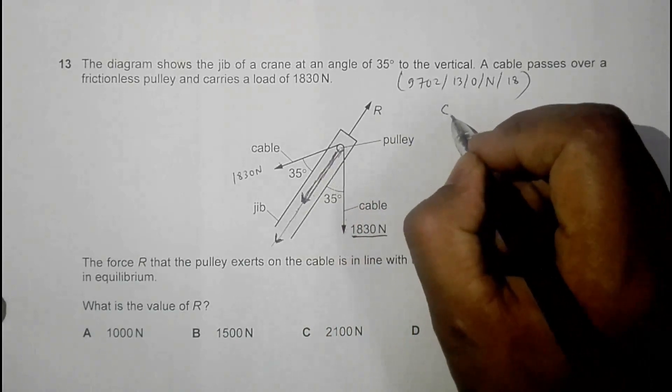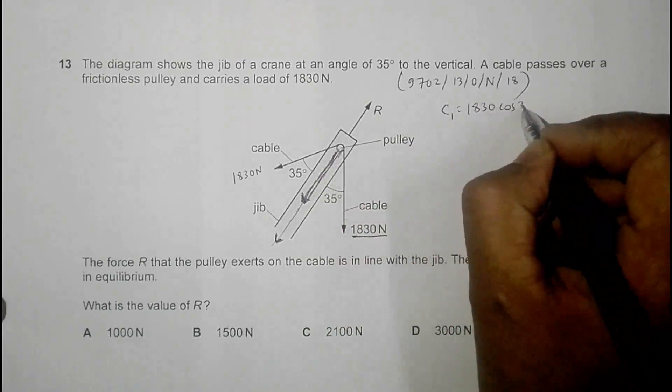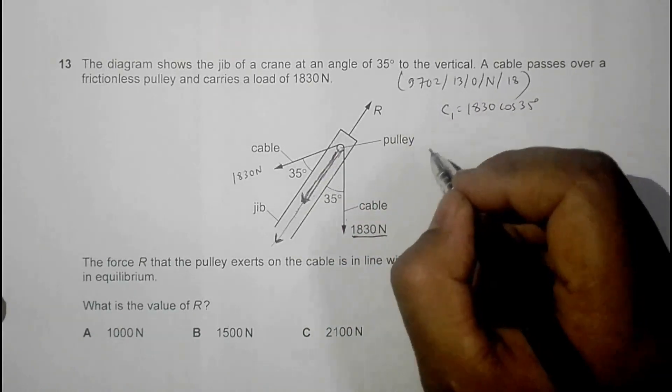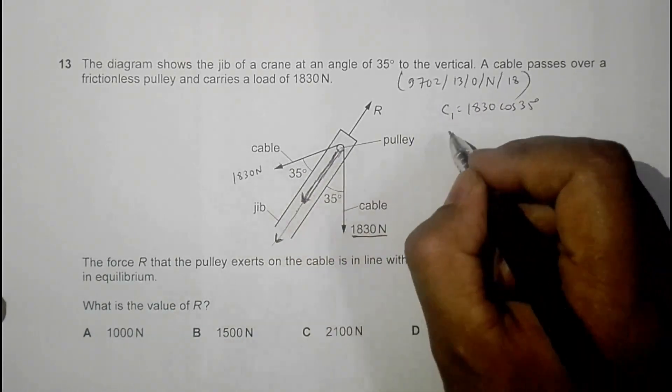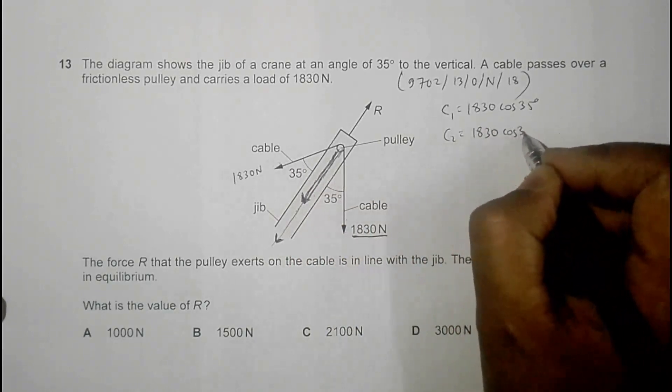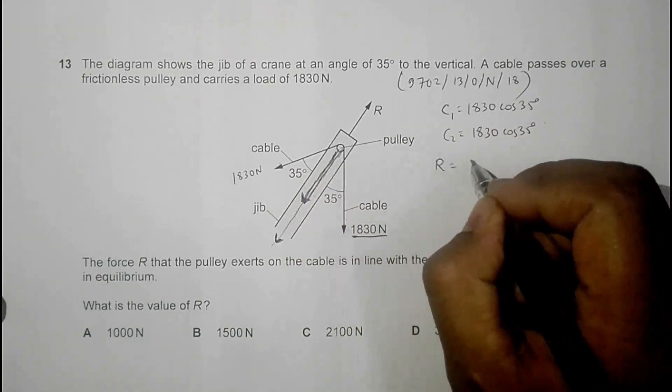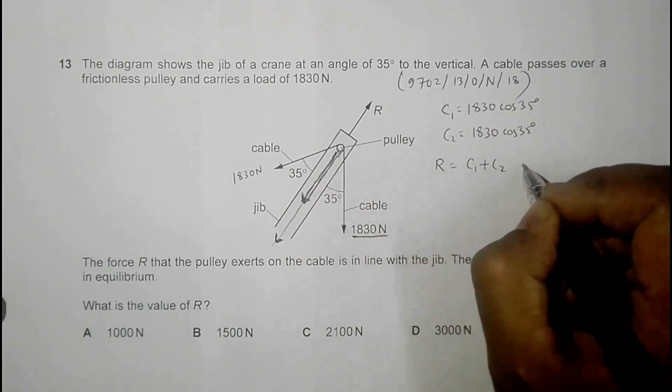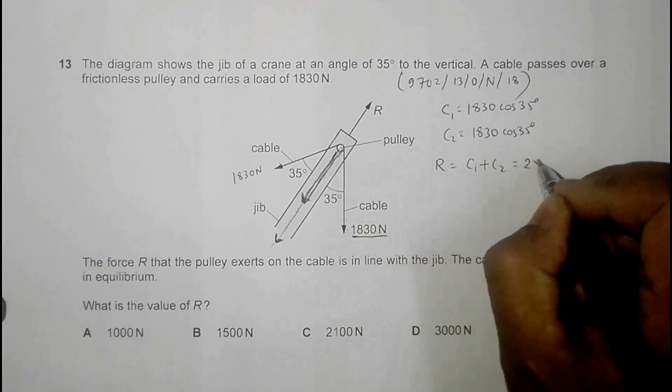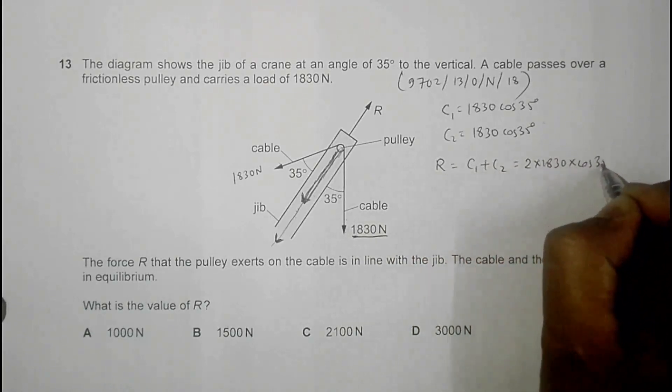So the components individually: one component C1 is equal to 1830 times cos of 35 degrees, and another C2 is equal to again 1830 cos of 35 degrees. So the total of these two, which means the resultant, is equal to C1 plus C2, and that's equal to 2 times 1830 times cos of 35 degrees.